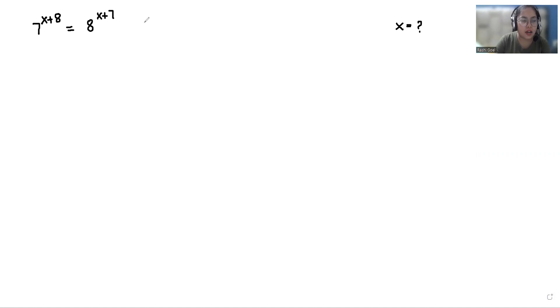So let's start with today's video solution. According to the exponent identity x^m times x^n equals x^(m+n), we can write 7^x times 7^8 equals 8^x times 8^7.